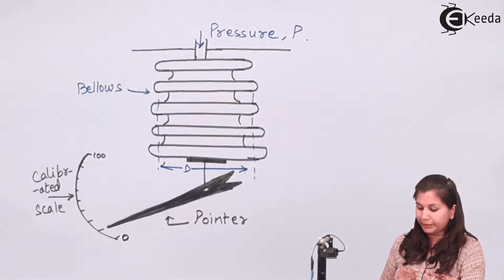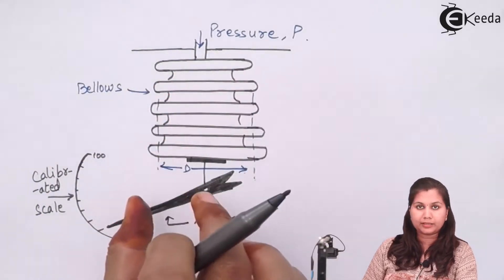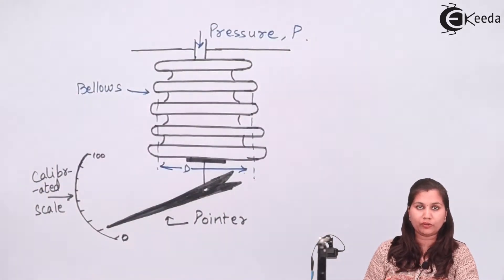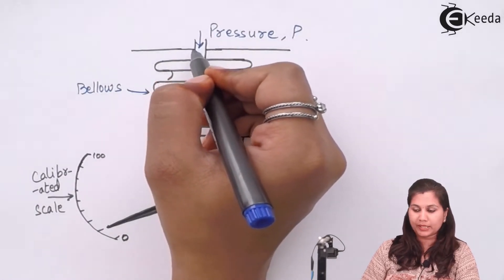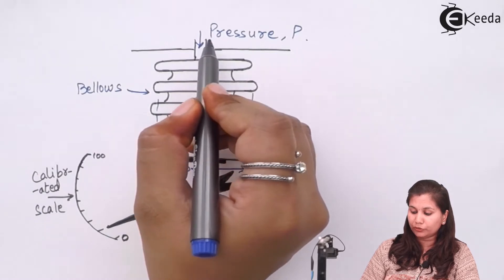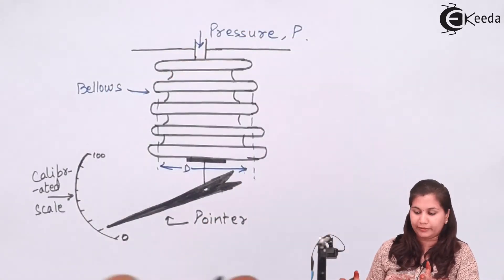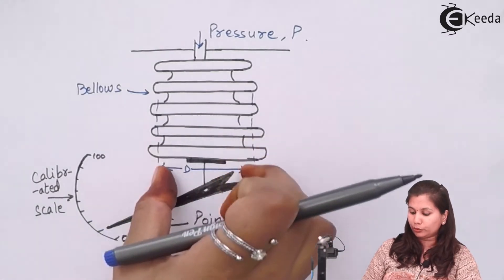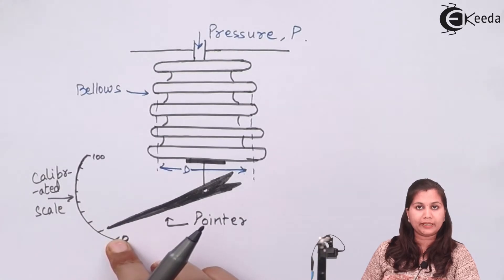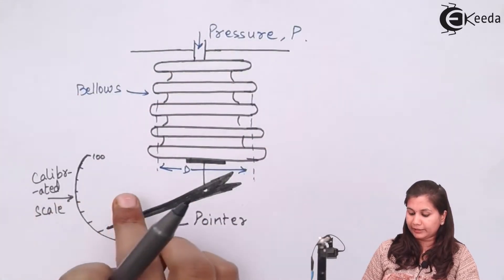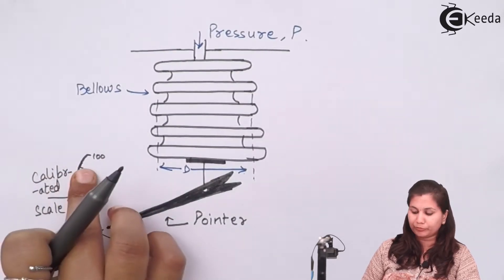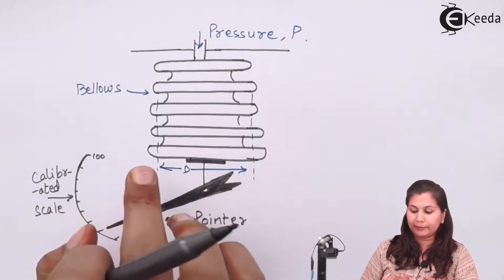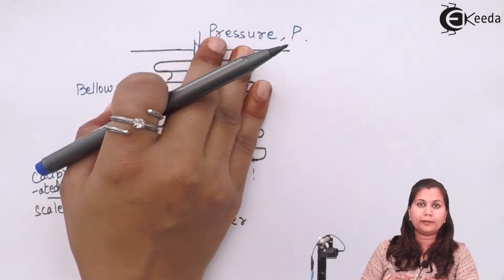So this is a bellow. Here you can see that it consists of circular parts which are joined together one over the other. When the fluid whose pressure we want to measure is allowed to enter from the top side into the bellows, it is going to expand axially in this direction, and due to this expansion the pointer is going to move over the calibrated scale. So pressure can be directly measured by taking a reading from the scale. This scale is calibrated in terms of pressure, so the expansion and contraction of this bellow element is directly proportional to the pressure of the fluid.